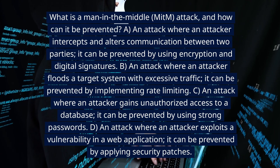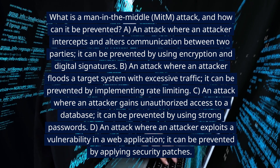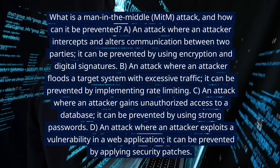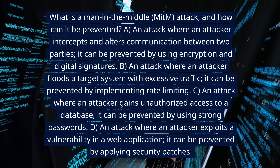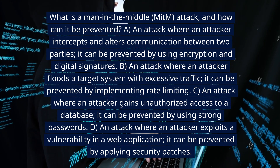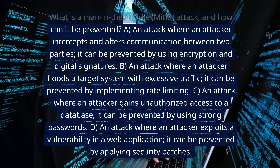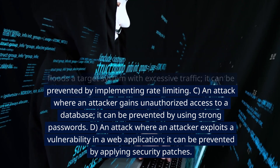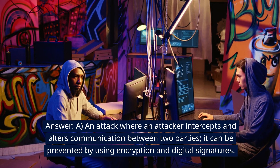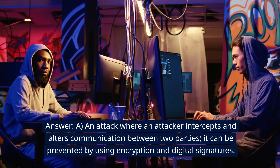What is a man-in-the-middle (MITM) attack, and how can it be prevented? A. An attack where an attacker intercepts and alters communication between two parties; it can be prevented by using encryption and digital signatures. B. An attack where an attacker floods a target system with excessive traffic; it can be prevented by implementing rate limiting. C. An attack where an attacker gains unauthorized access to a database; it can be prevented by using strong passwords. D. An attack where an attacker exploits a vulnerability in a web application; it can be prevented by applying security patches. Answer: A. An attack where an attacker intercepts and alters communication between two parties; it can be prevented by using encryption and digital signatures.